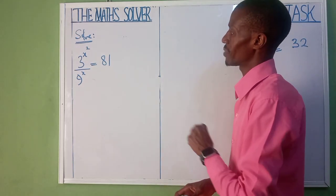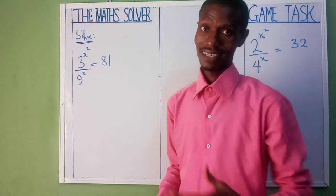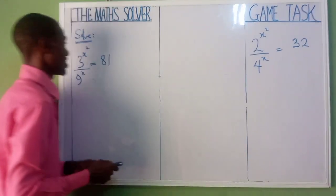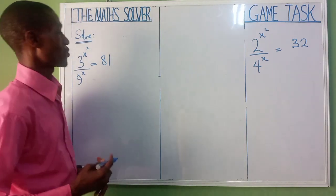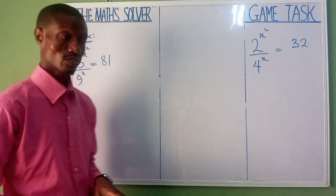3 raised power of x squared divided by 9 raised power of x equal to 81. It's very simple, friends. Let's solve it together. Here, as you can see, we have two methods that we can use to solve this, even more than two methods. But let's just use the simplest one to solve this.